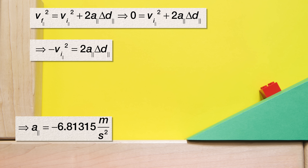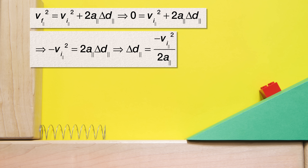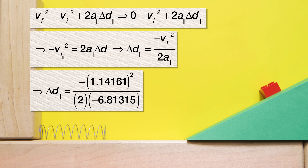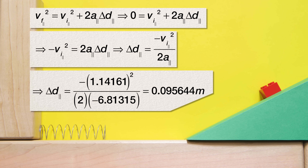Subtract velocity initial parallel squared from both sides and then divide both sides by two times the acceleration parallel to get the displacement in the parallel direction equals the negative of the initial velocity in the parallel direction squared divided by two times the acceleration parallel. So with numbers, that is the negative of the quantity 1.14161 squared divided by two times negative 6.81315, which is 0.095644 meters.